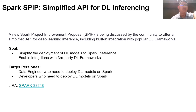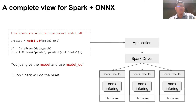This SPIP is still under discussion. If you are interested, you can join the discussion as well. This is a simple example showing how a developer should complete inference after DL on Spark is enabled in the future. We can see that the only thing the user needs to do is to import the corresponding framework extension and model URL. Then, all the complexities including type processing, conversion, and framework initialization are hidden in the model UDF.